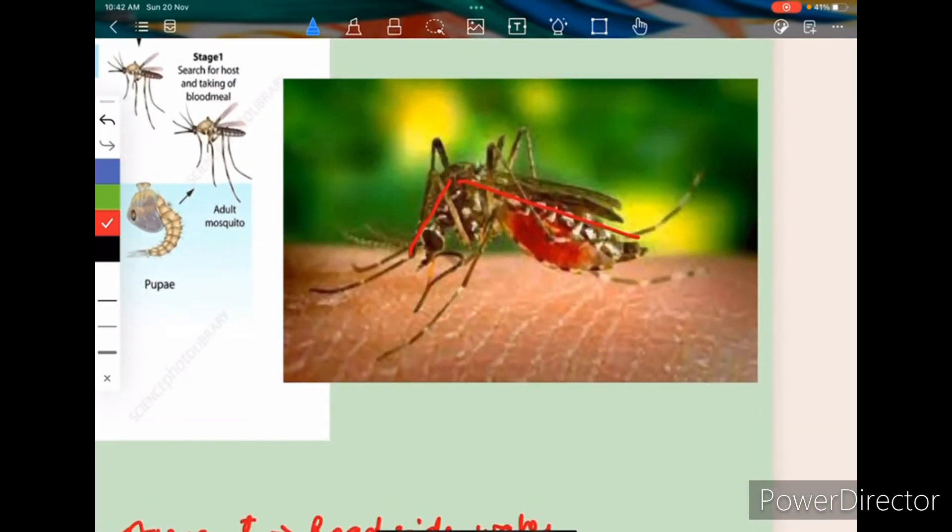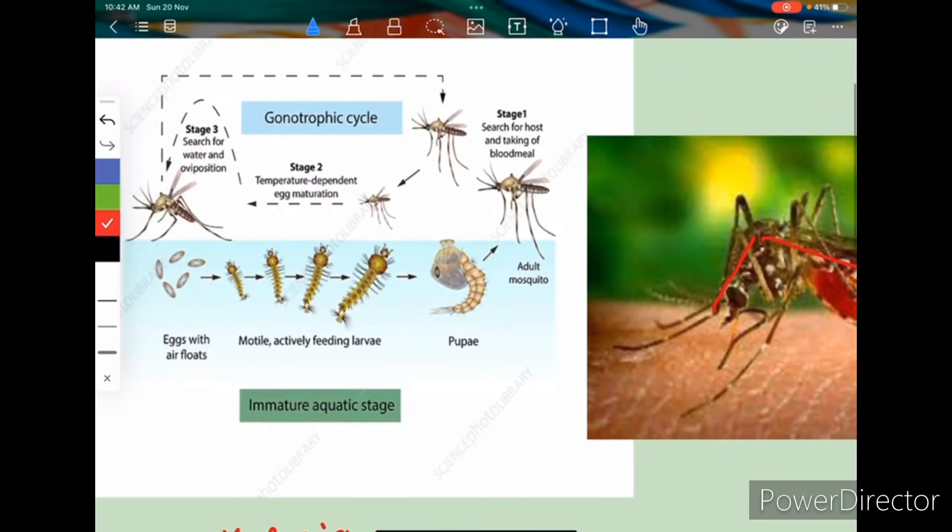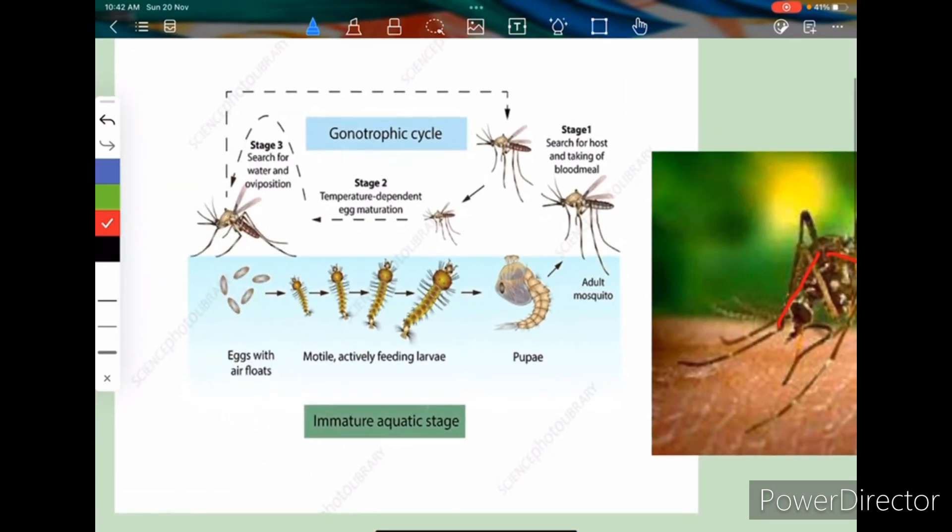So this way you can identify. See, they have got an inclined position. See the larva. See the eggs are single. Single eggs are there, or eggs are something like this. They have got lateral floats in them. Then this larva is a surface feeder, motile actively feeding larvae.